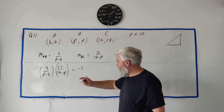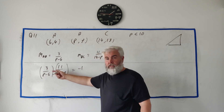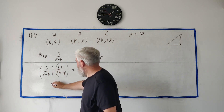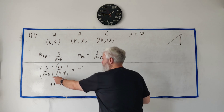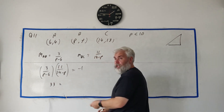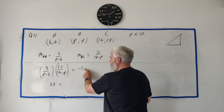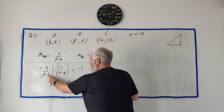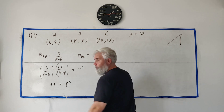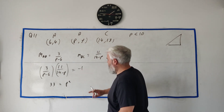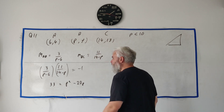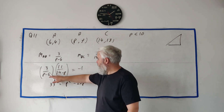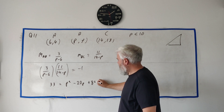Let's solve that by multiplying across. Top by top: 3 times 11 is 33. Bottom by bottom: (p minus 6)(14 minus p) gives us p times minus p which is minus p squared. Multiplying over gives plus p squared. For the p terms: 14p plus 6p is 20p, so we get minus 20p. And 6 times 14 is 84, giving plus 84.